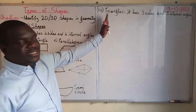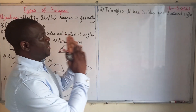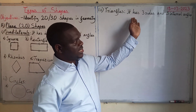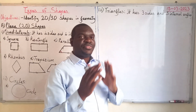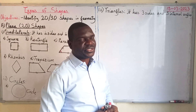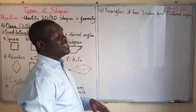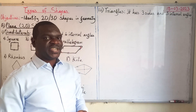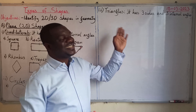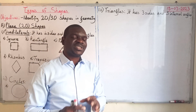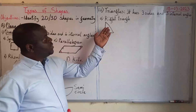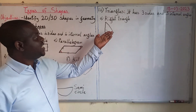The next type of plane shapes are triangles. Triangles have three sides and three internal angles. We have six different types of triangles to look at, so pay attention to what makes each one different from the others.